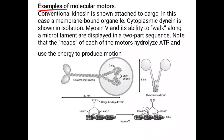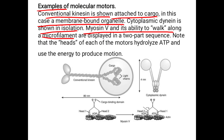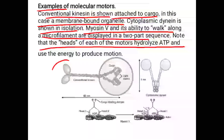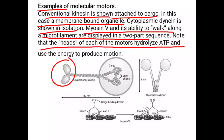These are some examples of molecular motor molecules. Conventional kinesin is shown attached to its cargo — in this case a membrane-bound organelle. Cytoplasmic dynein is shown in isolation. Myosin 5 and its ability to walk along microfilaments is displayed in a two-part sequence. Note that the heads of each motor hydrolyze ATP. The kinesin molecules bind to cargo via their heads, and with two heads they produce forward movement.